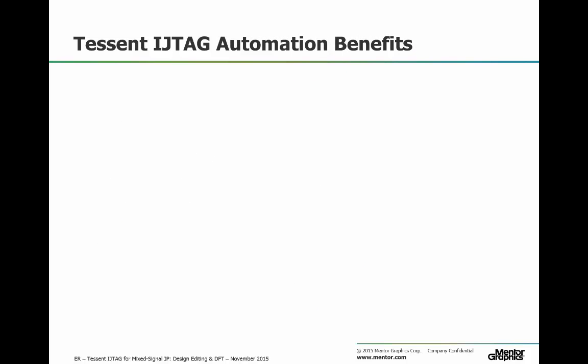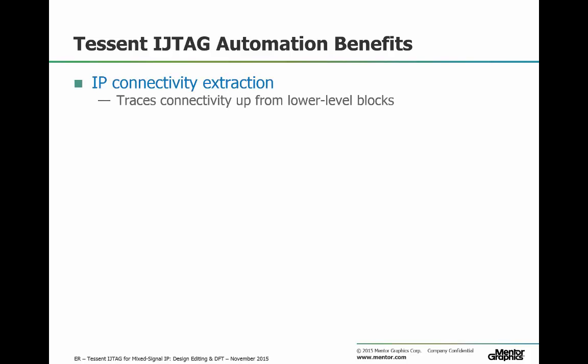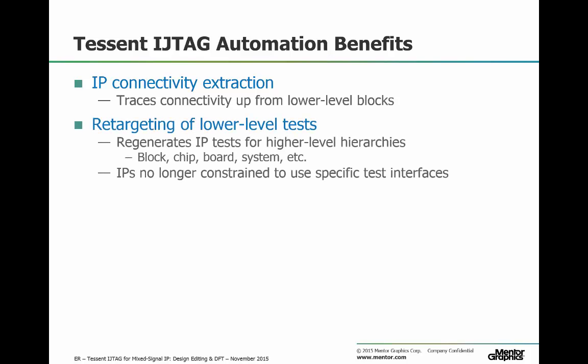So what are the exact benefits that Tessent iJTAG brings in this case? Firstly, it's able to extract the connectivity down to IPs instantiated inside the design. It starts from your IP block and extracts the connectivity by tracing up. Another benefit is that you can take the lower level tests that were defined for that IP specifically and they can be retargeted — those tests are completely regenerated, taking into account that there's an access network between the IP and the top level.